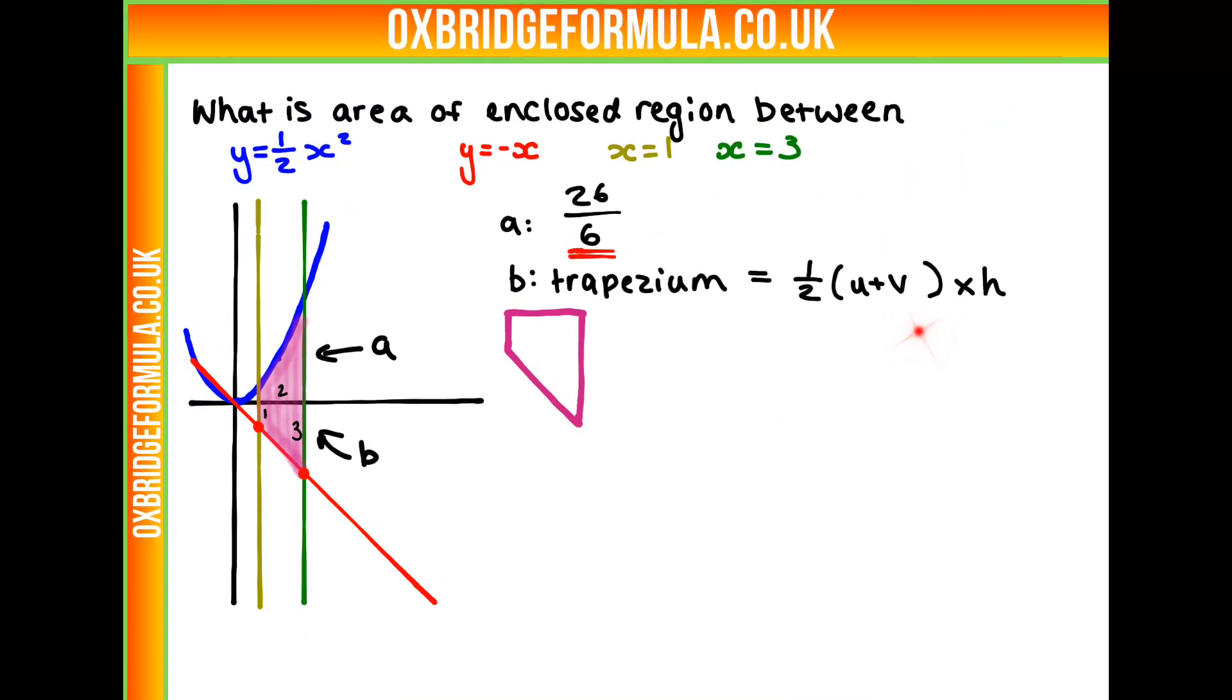Here are all our values for our trapezium. We just need to put them into our equation. A half times 1 plus 3 times 2. We can cancel those half and 2 out just to get 1 plus 3, which is 4. That's our area of our B section there.